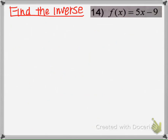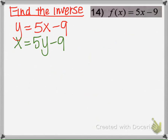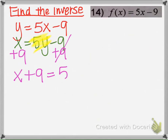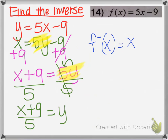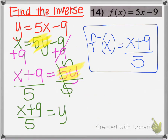Example 14, the last one: switch the x and y, then solve for y. Add 9 to both sides, then divide to eliminate the coefficient next to y. Now y is by itself. The inverse of function f is f⁻¹(x) = (x + 9) / 5.